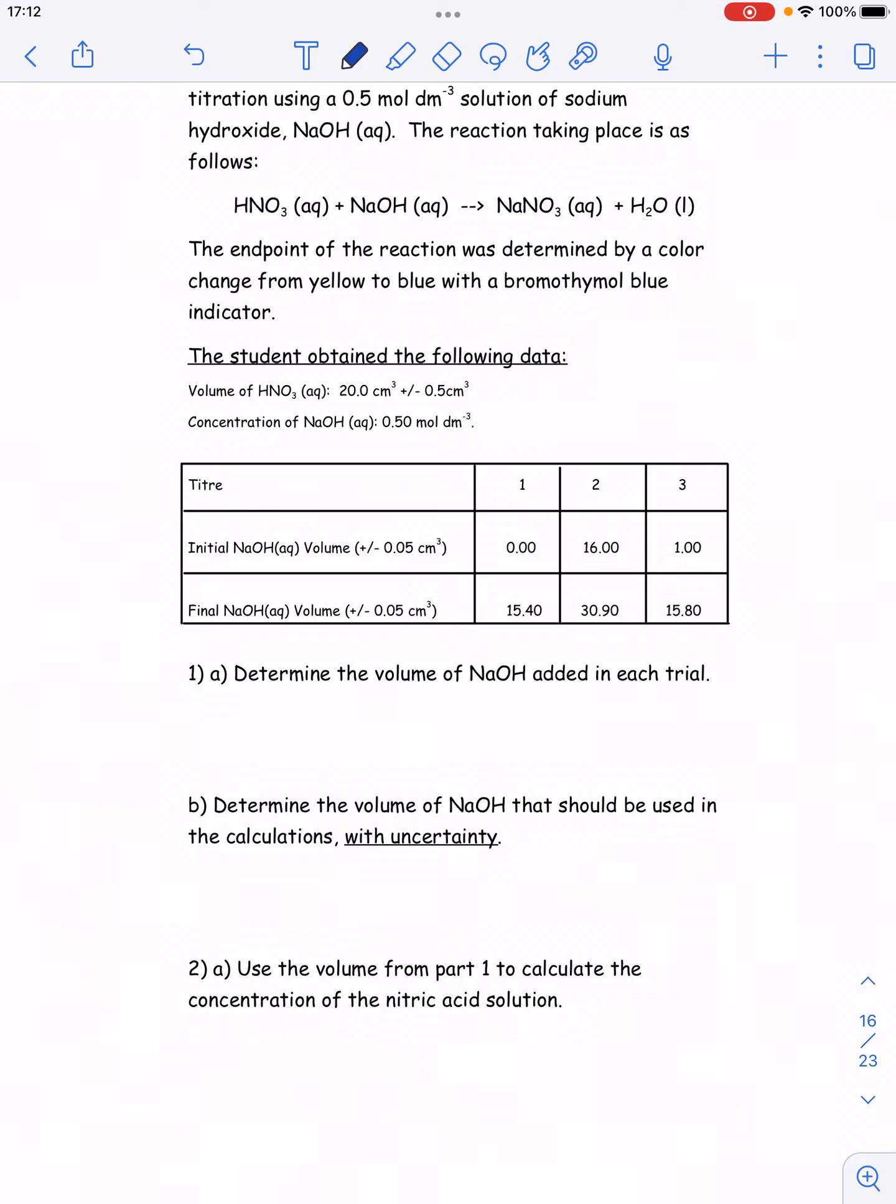Okay, so we're doing a titration. We're trying to figure out the concentration of a solution, in this case nitric acid, and we're adding sodium hydroxide to it to try to figure out where the reaction ends. Usually we determine the endpoint of a reaction with a color change.